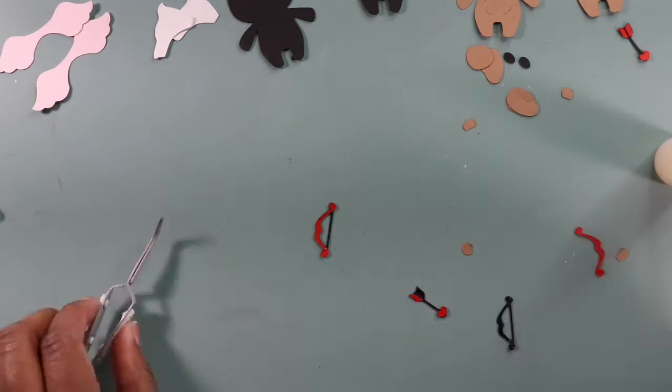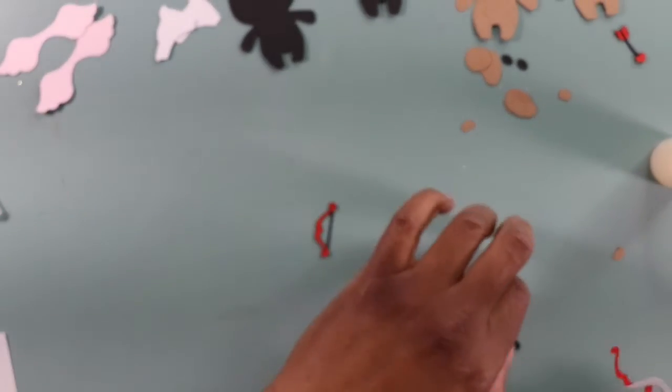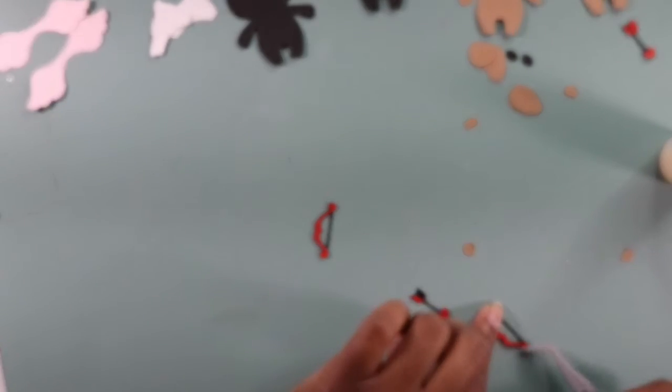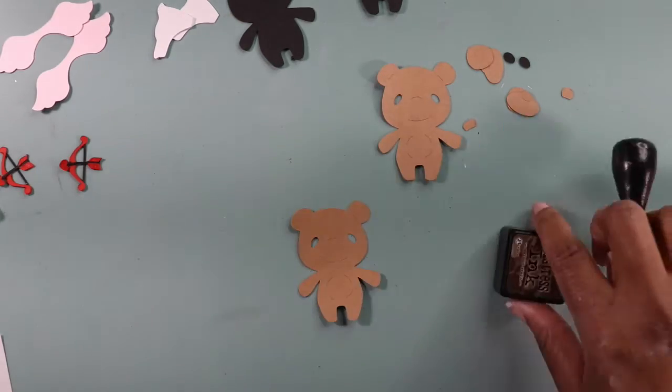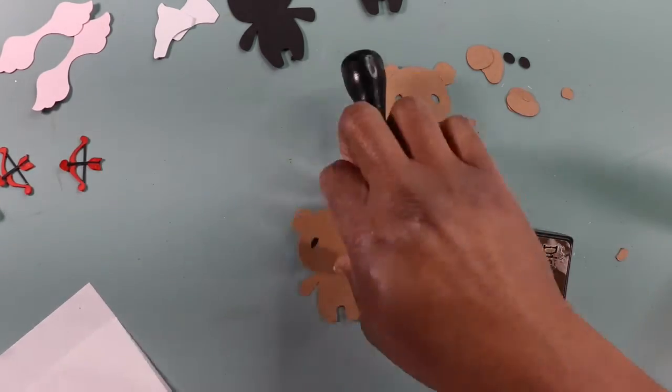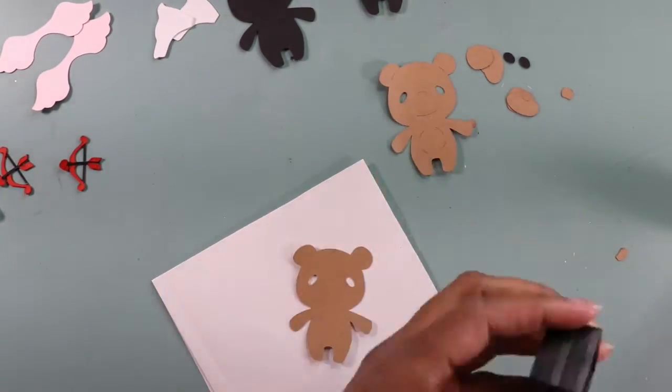So now I am just gluing all of my images together and I like to start with the small stuff first because when I start with the large stuff I always lose little pieces. So I start with the small stuff and then I work my way up to the bigger images.